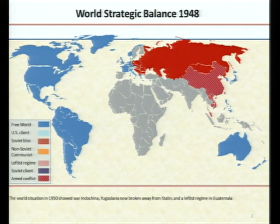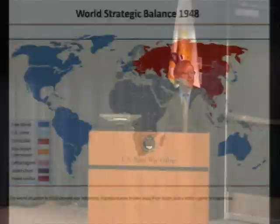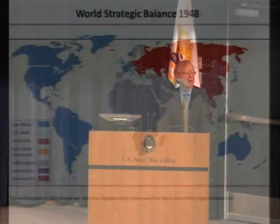I would argue that there were really three fronts in the Cold War, and I'm going to discuss them in the order in which they became significant. The first front was here in Europe and here in Asia — that is where the Soviet and American armies actually met at the end of the Second World War, including the territory they had occupied during the war, which they then turned into their core alliance.